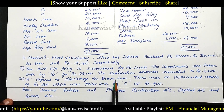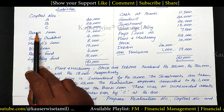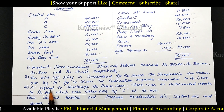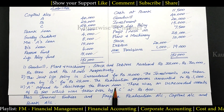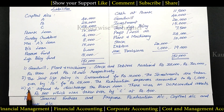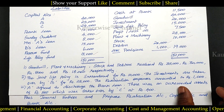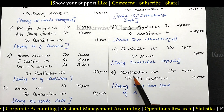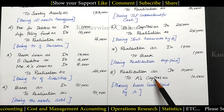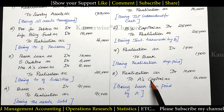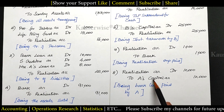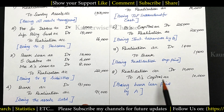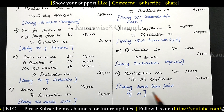Fifth adjustment: A agreed to discharge the bank loan. Bank loan is a third-party liability, but A has agreed to take up responsibility for it. Instead of bank, we record the partner's capital account. Entry: Realization Account Dr. to A's Capital Account — 10,000 — being bank loan paid by A.